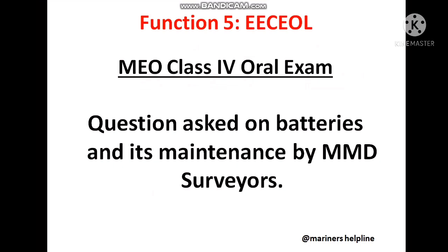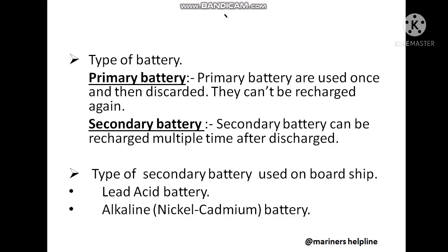I have covered some questions which are mostly asked by the servers. The first question is: what are the types of battery? The types of battery are primary battery and secondary battery. Primary batteries are those batteries that are used once, and when discharged they have to be discarded — they cannot be recharged. These kinds of batteries are used in watches, torches, etc.